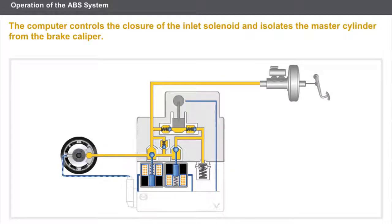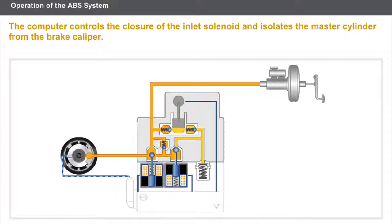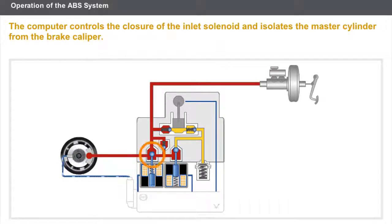Now let's look at the maintained pressure phase. The pressure in the circuit increases, and wheel slip has a tendency to exceed the 20% threshold. The computer controls the closure of the inlet solenoid and isolates the master cylinder from the brake caliper. An increase in the braking pressure for this wheel becomes impossible.